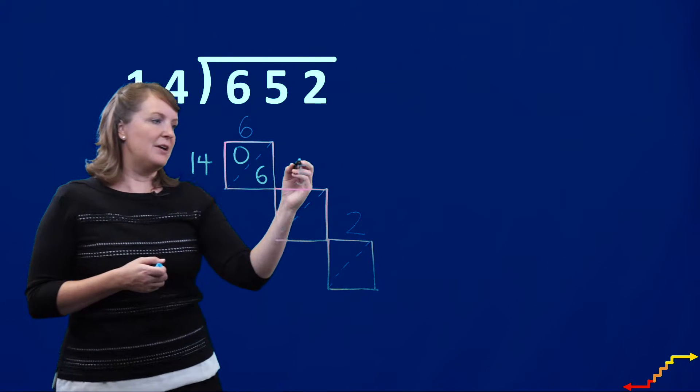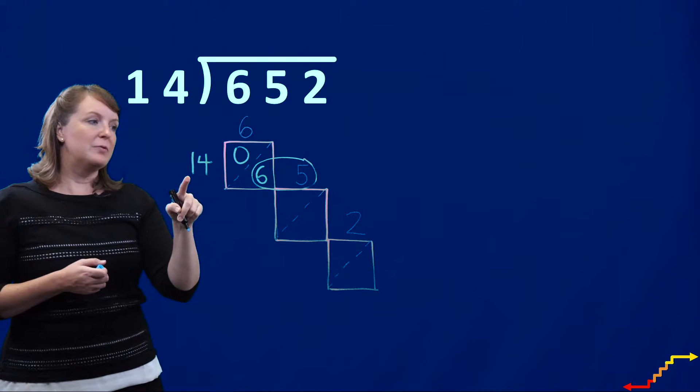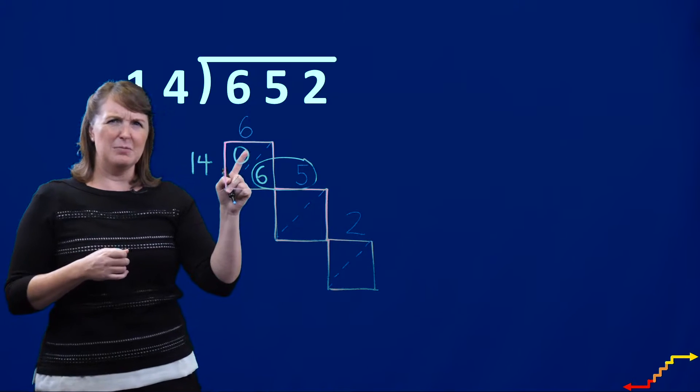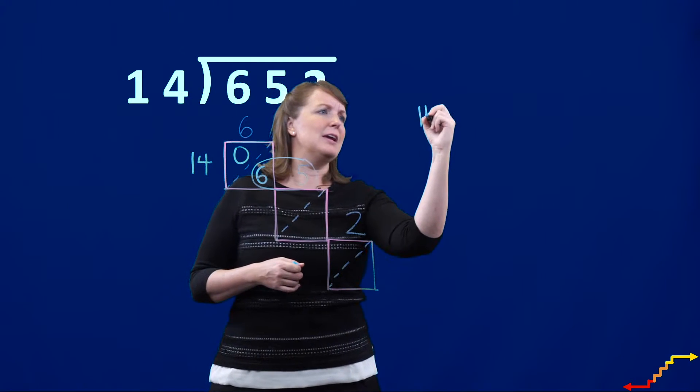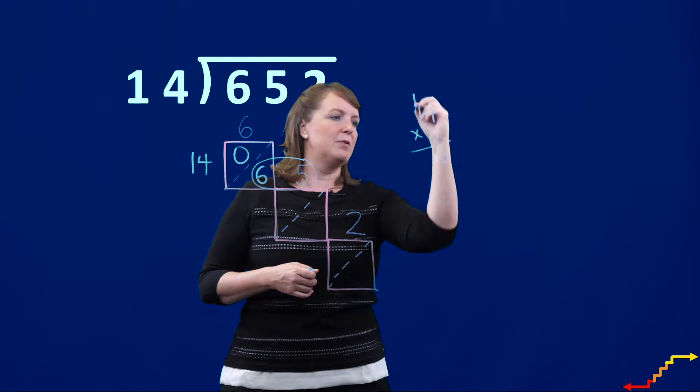Now my question, and I always like to circle this here, is how many groups of 14 can I make if I have 65? I'm going to just double check my math over here. I think it's going to be four groups. So let's see, 14 times 4.